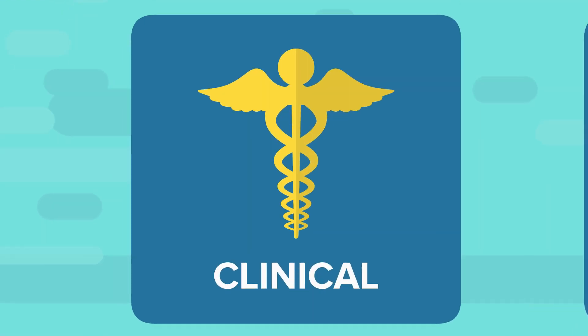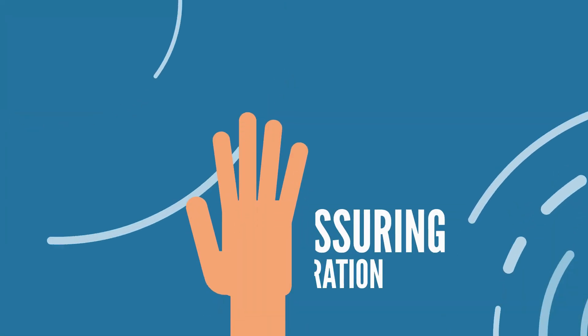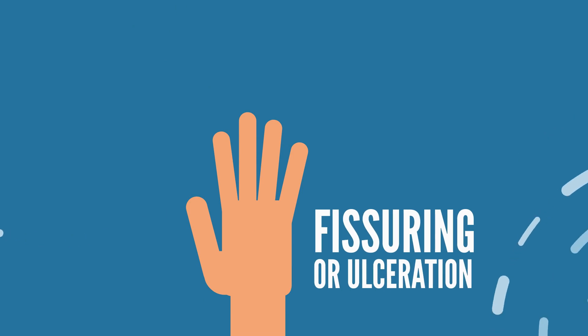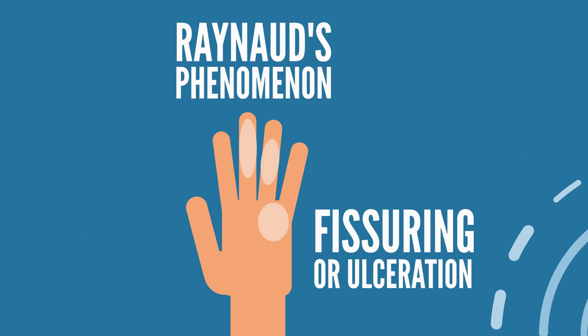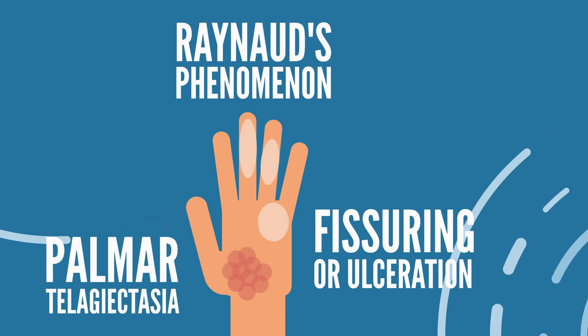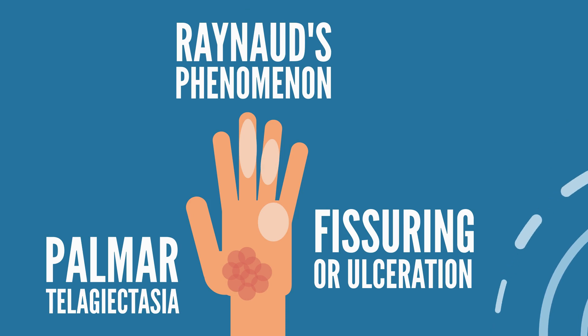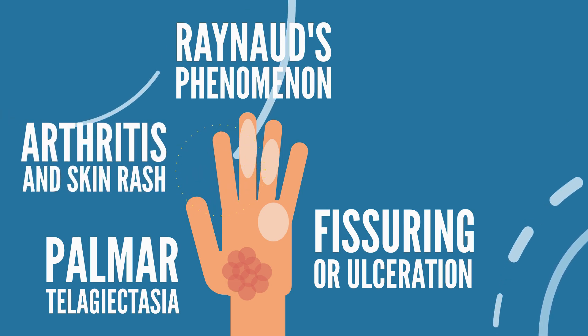Features in the clinical domain include fissuring or ulceration of the digits, Raynaud's phenomenon, palmar telangiectasia, and inflammatory arthritis.